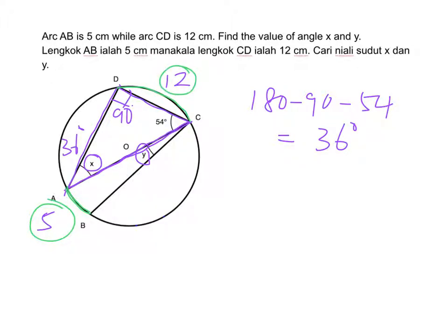We learned that the angle subtended by the arc is proportional to the length of the arc. The ratio of Y to X - Y is subtended by AB, X is subtended by CD. So the ratio of Y to X is 5 to 12.